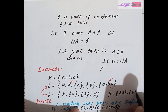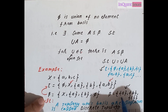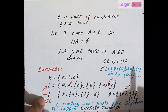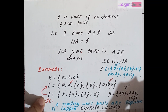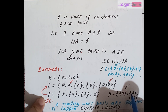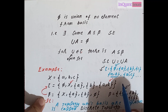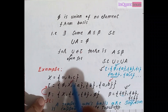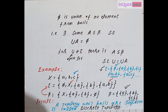You can generate the discrete topology by taking the union of elements of the collection of singletons — phi is also included. Taking the union of {a} and {b} gives {a, b}; the union of {a} and {c} gives {a, c}; and so on. In this way you can get all possible subsets of x, which is the power set of x. That's all about basis for topology — thank you so much.